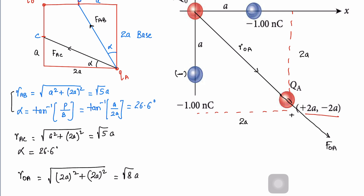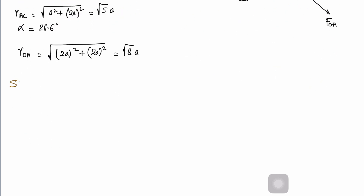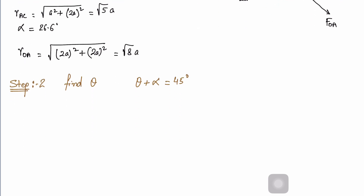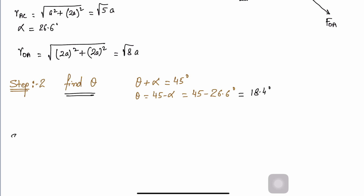Once you understand this, the question will be almost finished. Now step number two: find theta. I can say theta + alpha = 45 degrees, because this line cuts the square diagonally from the center. Since we know alpha, theta = 45° − alpha = 45° − 26.6° = 18.4 degrees.